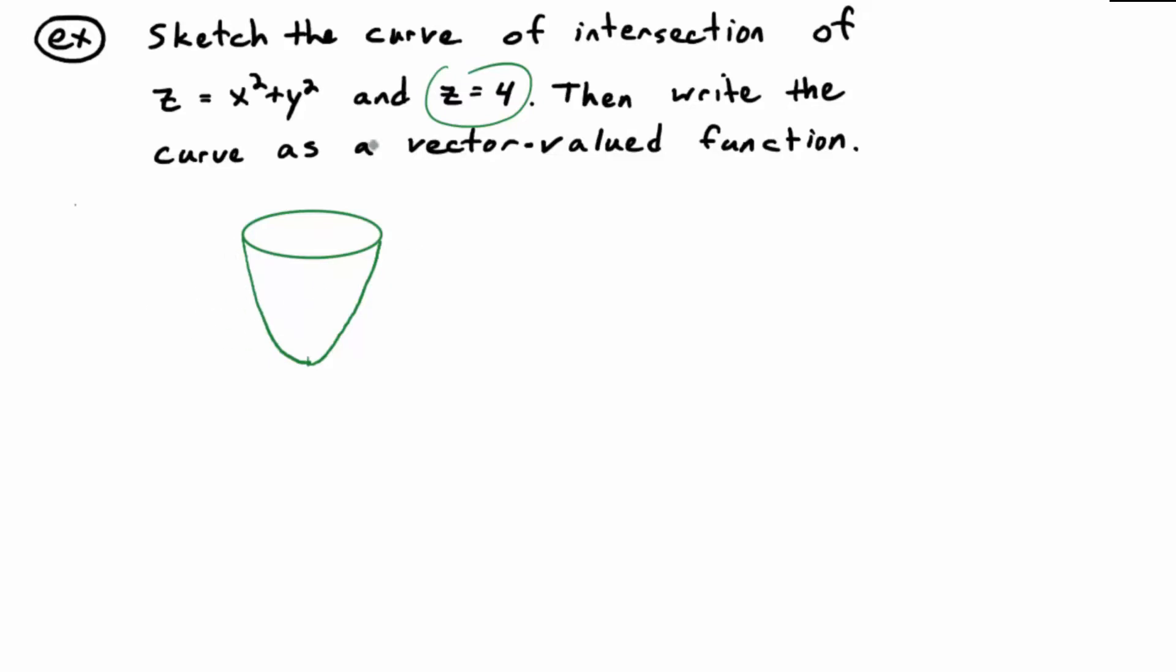So, you cut this thing with a plane. It's a special plane. It's a horizontal plane at a height of four. So, if you cut this thing at a height of four, it goes up forever. But let's say that's at a height of four. You cut it with a height of four, what does the intersection look like?